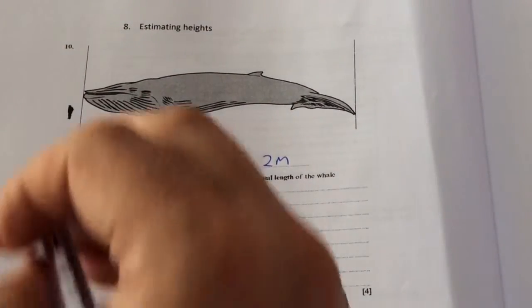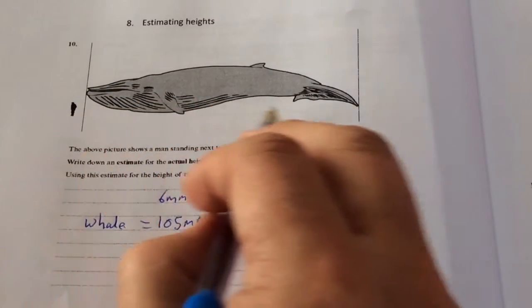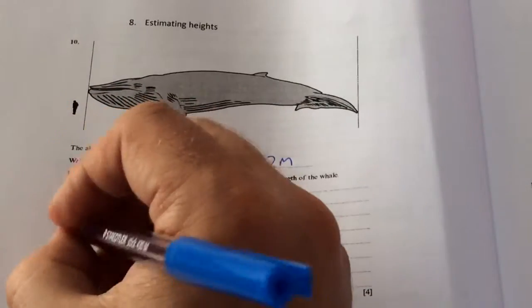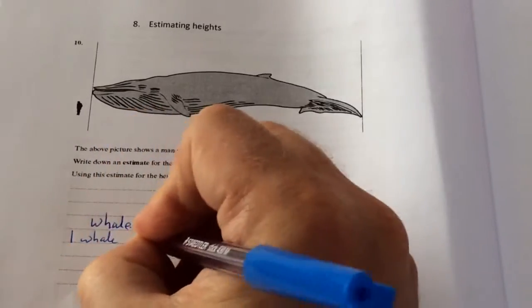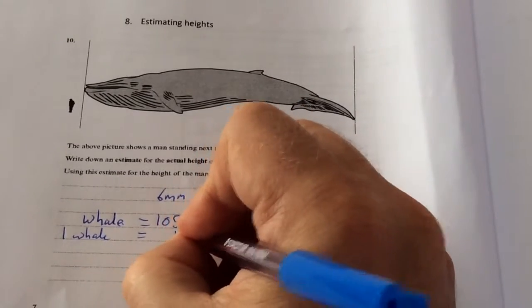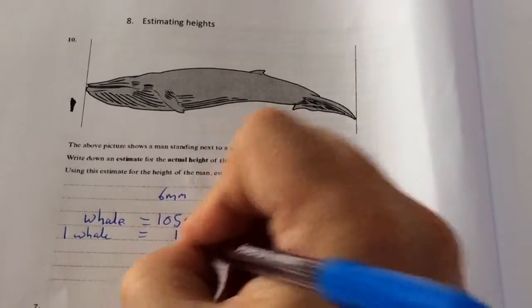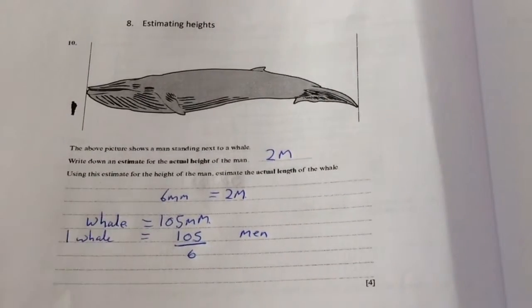So I need to find now how many men going across lying back to back next to each other would make the whale. So one whale is going to be equal to, let's look at how many men. Because the whale is 105 millimetres I'm going to divide it by 6. Because each man is 6 millimetres.